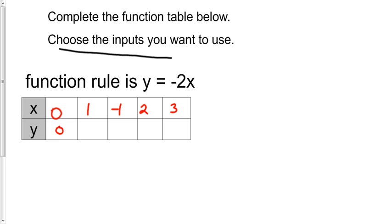One times negative two, negative two. Negative one times negative two, positive two. You almost made a mistake there. Two times negative two is negative four. And three times negative two is negative six. That's it. We're done.